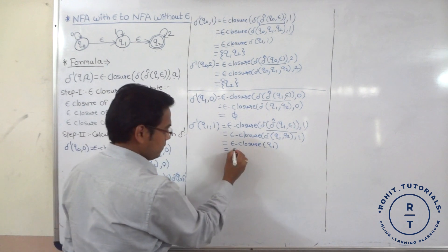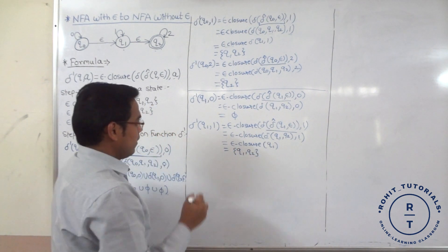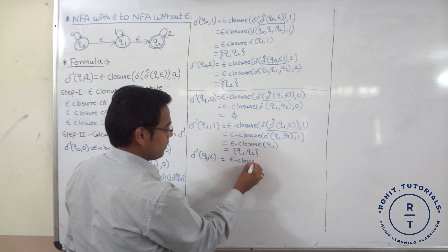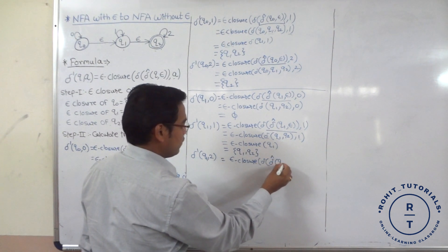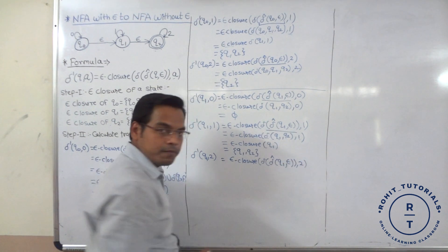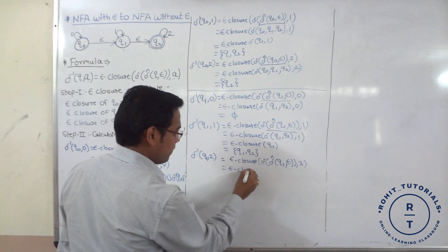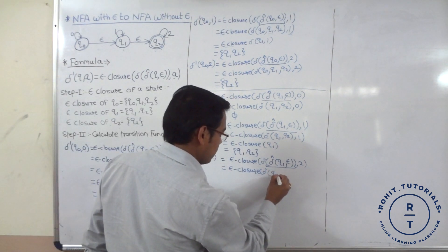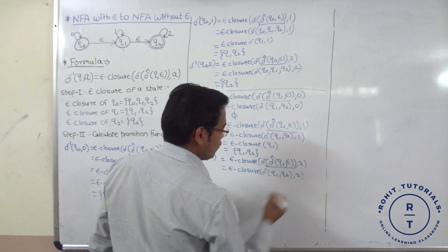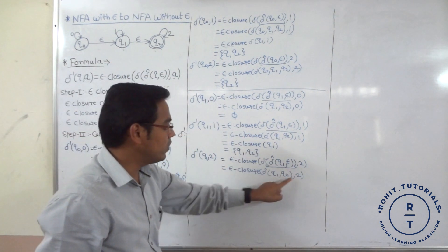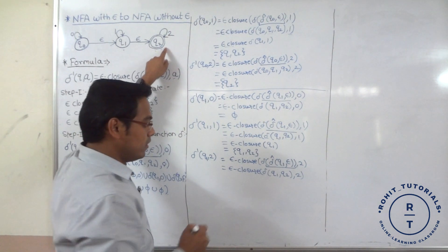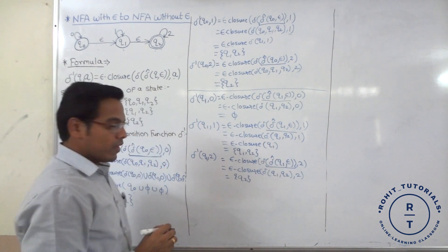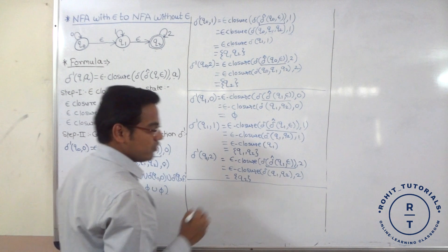Third transition for Q1 with input symbol 2. Epsilon closure of delta cap of Q1 with epsilon and input 2. Epsilon closure of Q1 is {Q1, Q2}. We compute the transitions with input 2. The result gives Q2. So for state Q1 all transitions are completed.